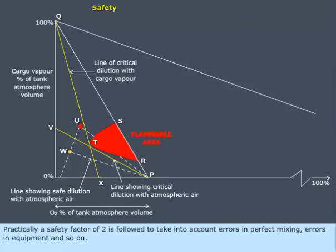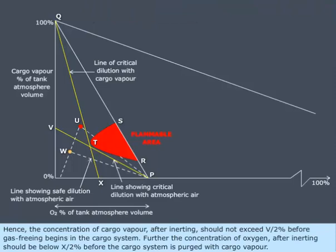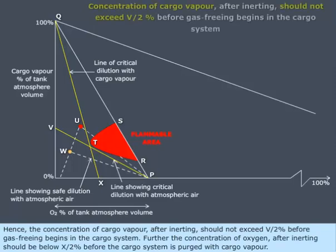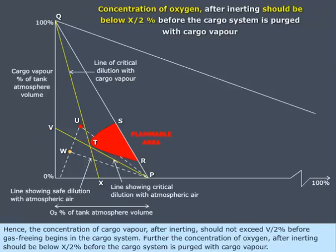Practically, a safety factor of 2 is followed to take into account errors in perfect mixing, errors in equipment, and so on. Hence, the concentration of cargo vapor after inerting should not exceed V/2 percent before gas freeing begins in the cargo system. Further, the concentration of oxygen after inerting should be below X/2 percent before the cargo system is purged with cargo vapor.